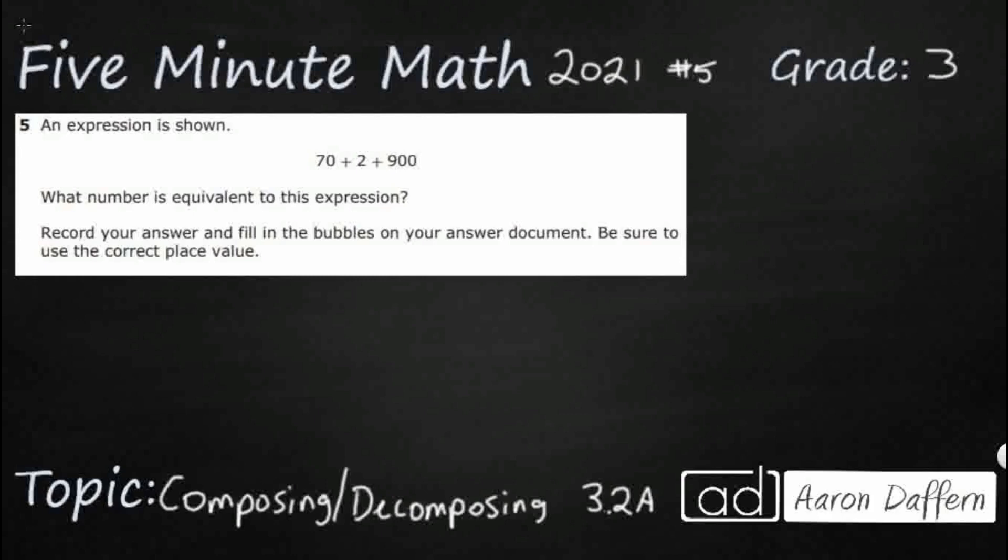So we have an expression shown here, 70 plus 2 plus 900. What number is equivalent to this expression? Let's make sure we understand what this means here.